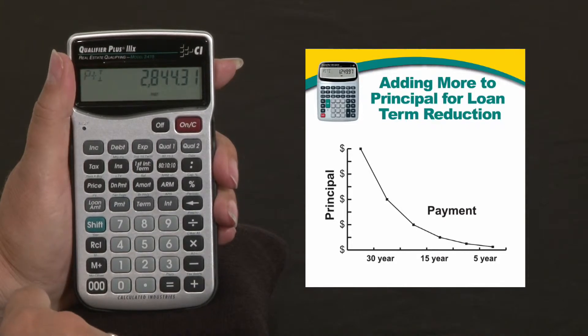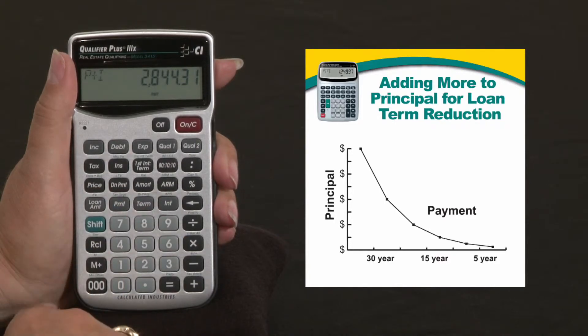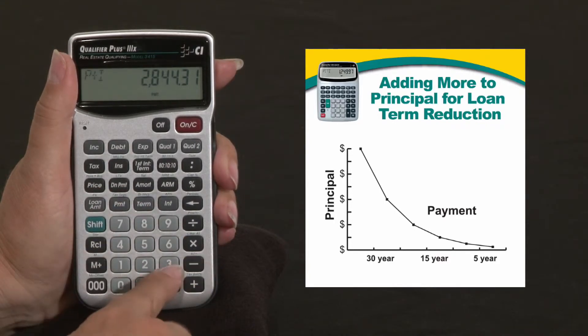The P&I payment is $2,844.31, but your client says he can afford a $3,000 payment.